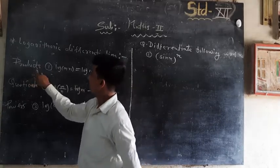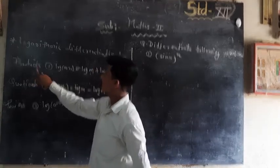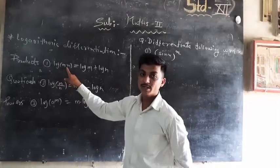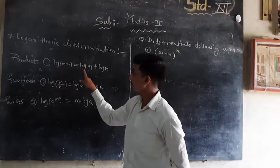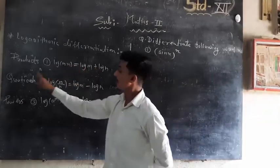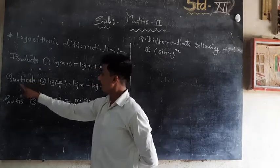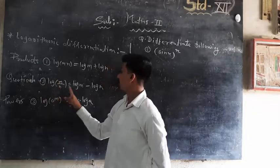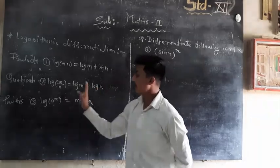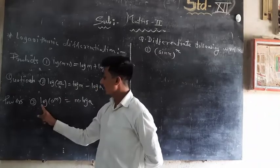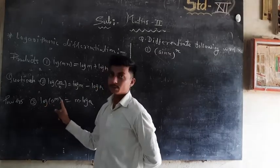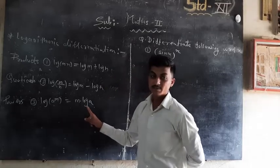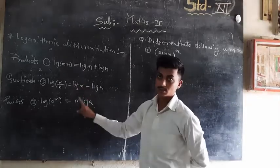First, suppose the function contains products — we use log(m × n) = log(m) + log(n). Second, log(m/n) = log(m) − log(n). Third, the power rule: log(a^n) = n · log(a). We simplify by using these rules.